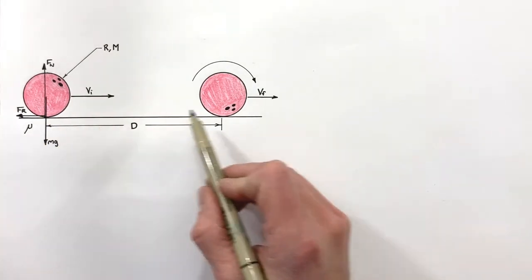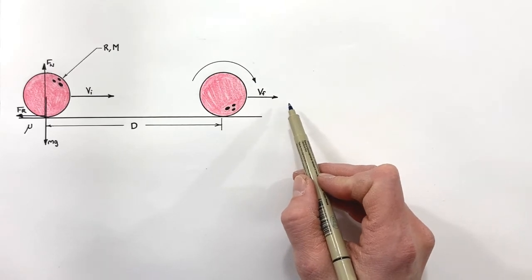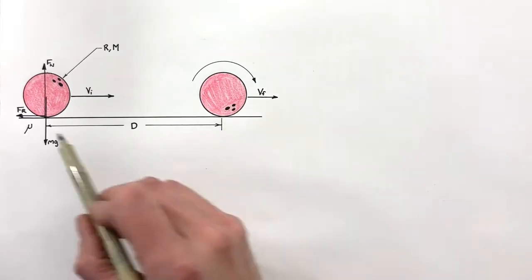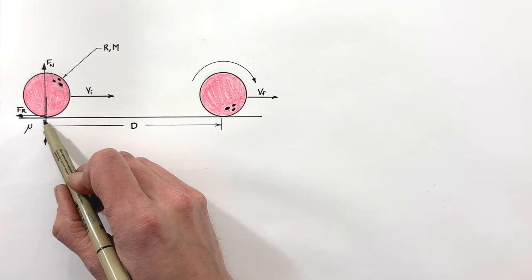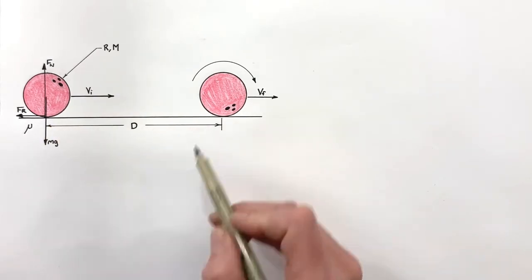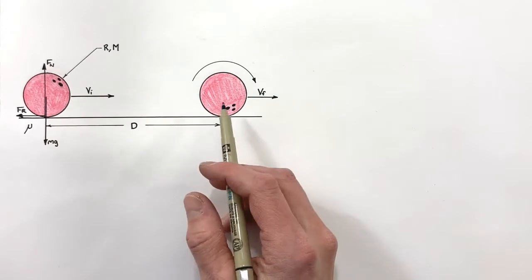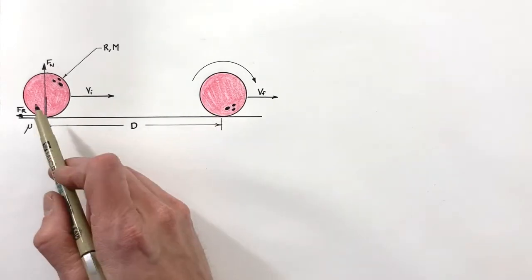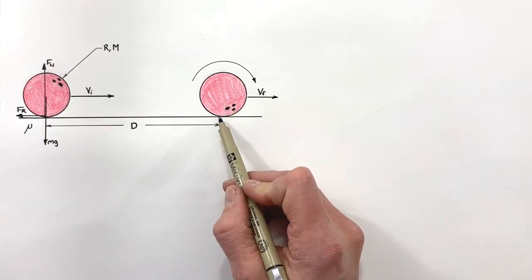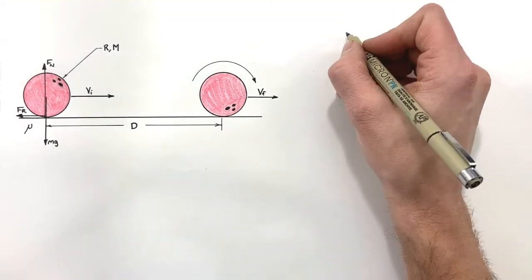Because there are no torques around that contact point, we can say that angular momentum is conserved around this point. This means that later on, once the ball is rolling without slipping, it will still have the same amount of angular momentum around that contact point. So in this problem we're going to say the initial angular momentum equals the final angular momentum at the point where the ball contacts the ground.